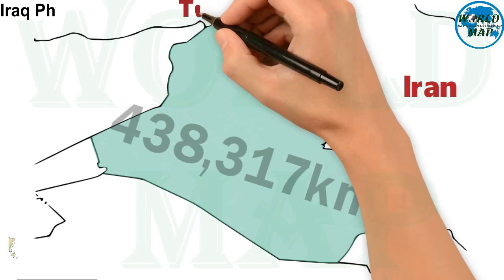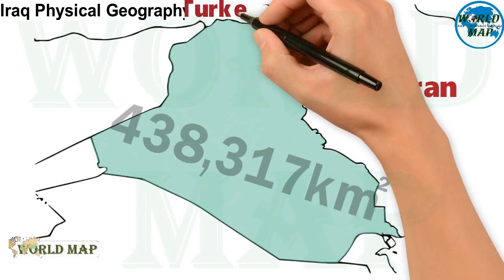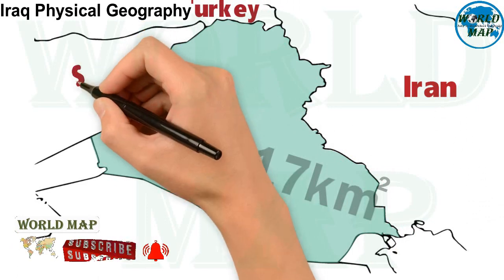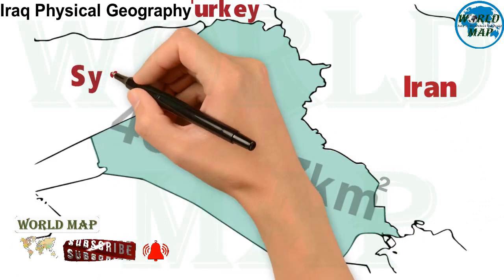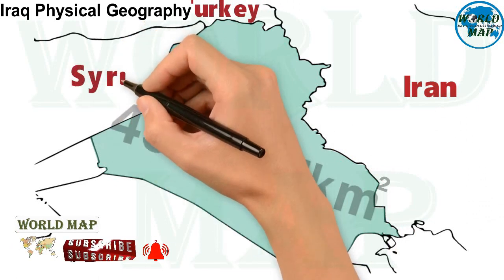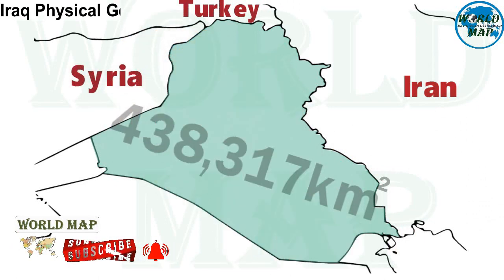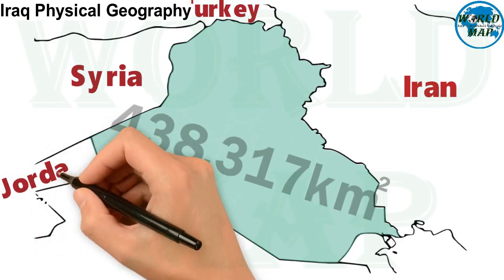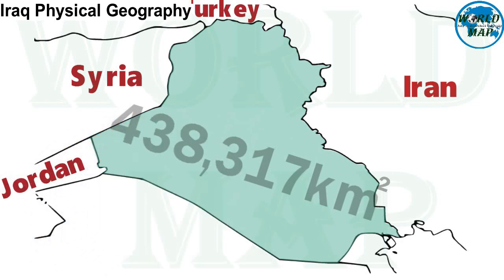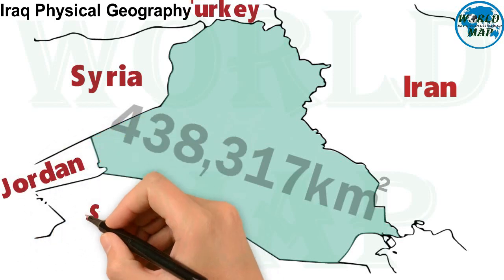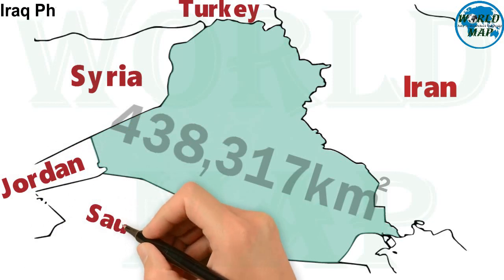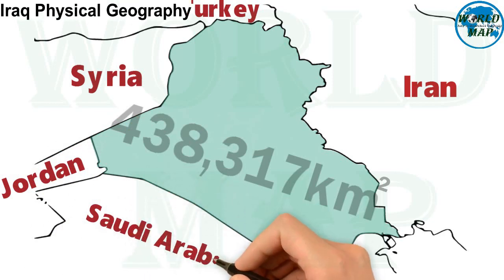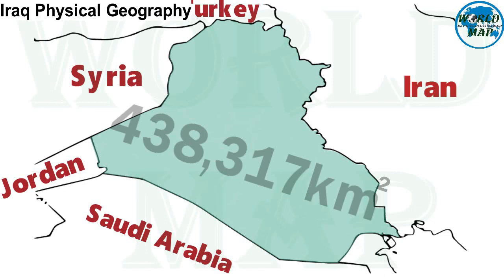Iraq is a country in Western Asia. It is bordered by Iran to the east, Turkey to the north, Syria to the west, Jordan to the southwest, Saudi Arabia to the south, Kuwait to the southeast, and the Persian Gulf also to the southeast.